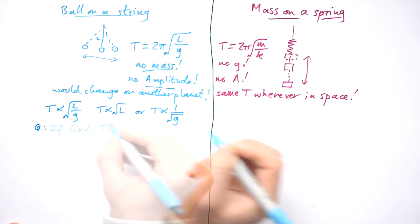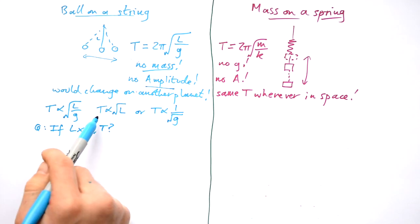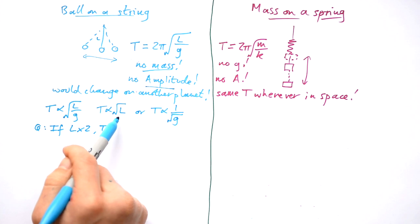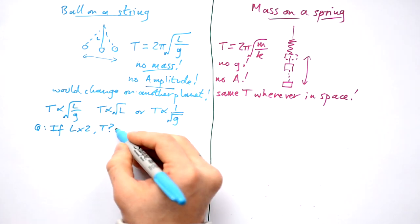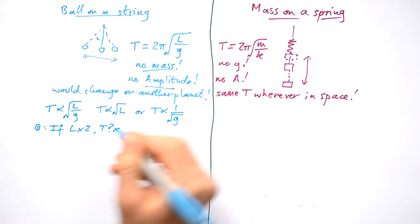So here's a question. If the length of your pendulum doubles, how is that going to affect the time period? Well, we know that the time period is proportional to the square root of L. So that must mean that the time is going to go up by a factor of root 2.